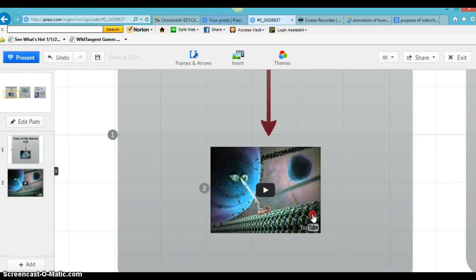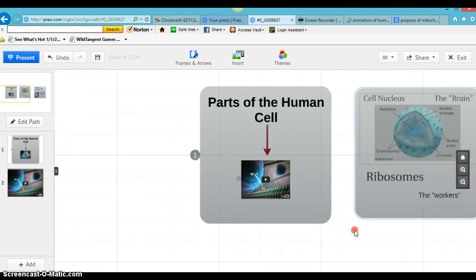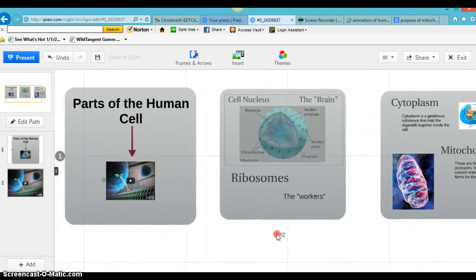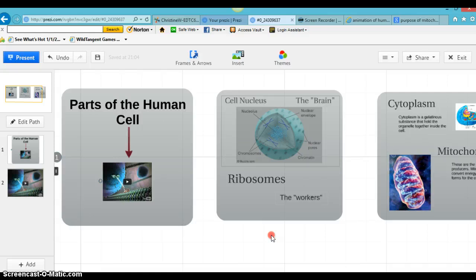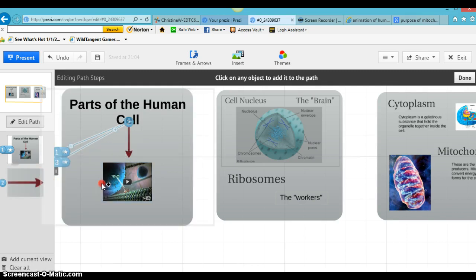Now, so we've added our video, and it will play right in our presentation. Next, we're going to talk about some path transitions. So you can see I have my different frames all put together, and now I'm going to start with making my path. So I'm going to start editing it. I want my path to go there, and then I want it to go here.